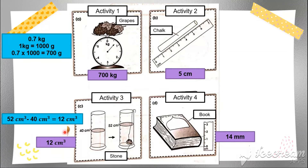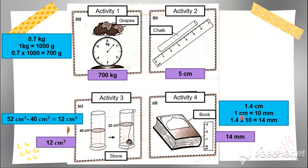For Activity 3, they ask for the measurement of the volume of the stone. You take the water displacement after the stone is placed in: 52 cm³ minus 40 cm³ gives 12 cm³. For the length measurement, the reading is given in centimeters but the answer is required in millimeters. Taking 1.4 cm and multiplying by 10 gives 14 millimeters, which is the correct answer. You can comment below and I can send the worksheet to you by email.